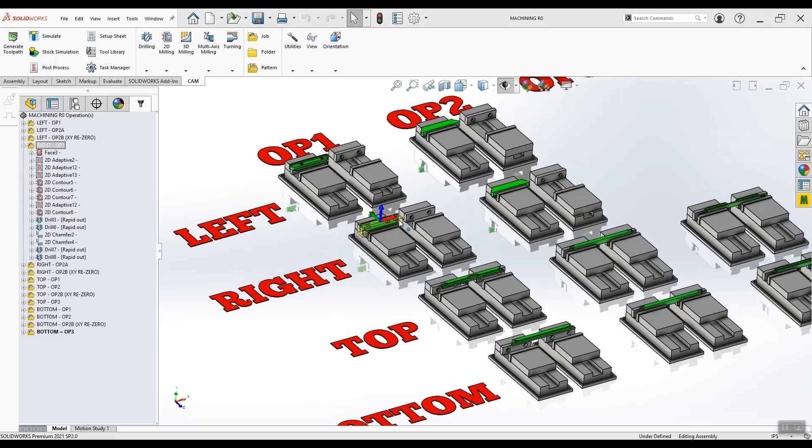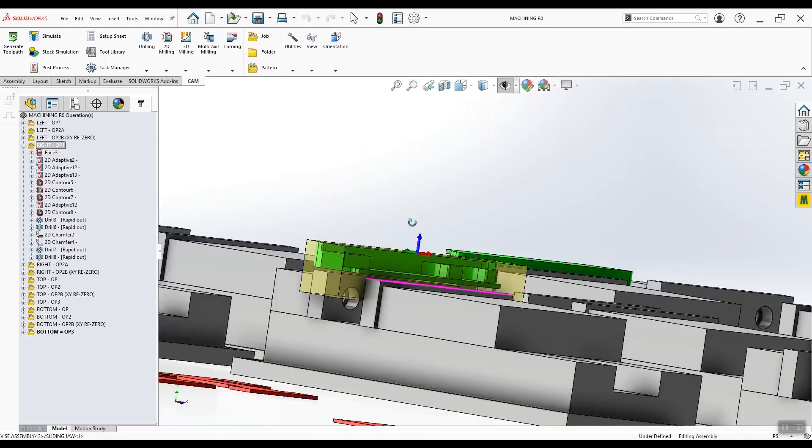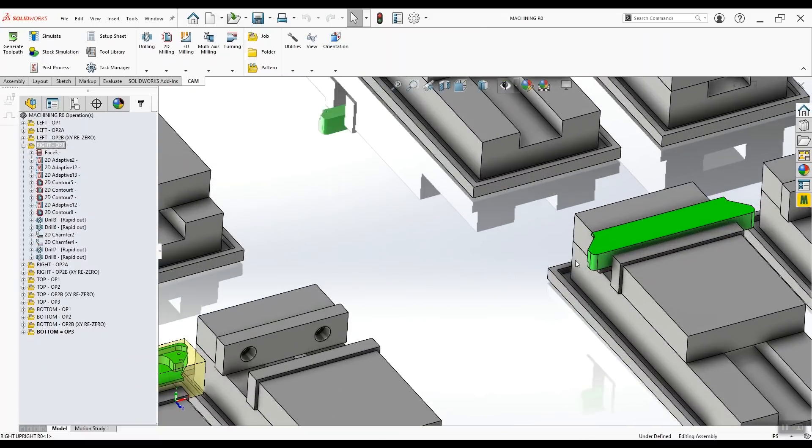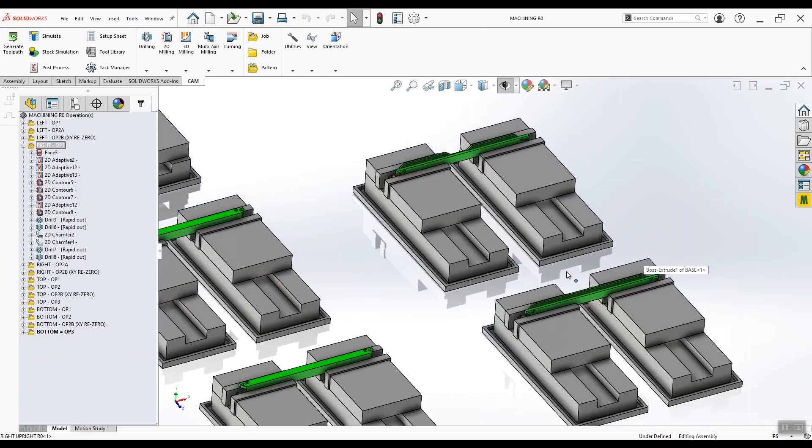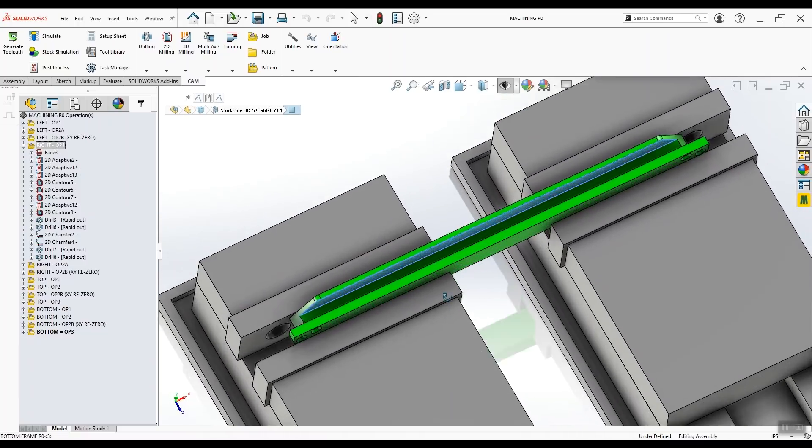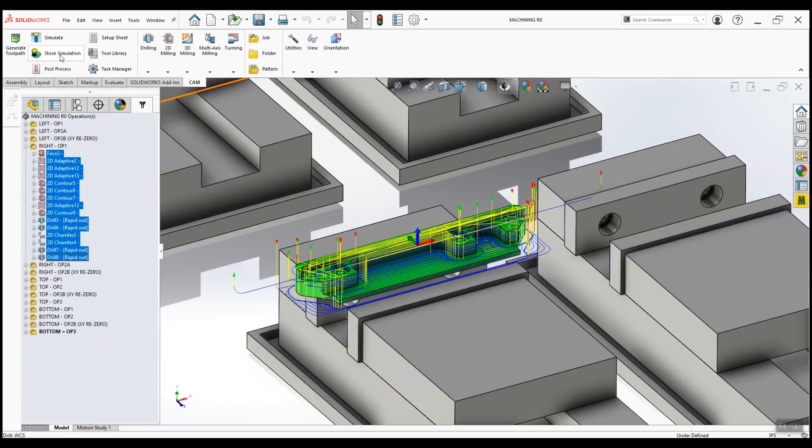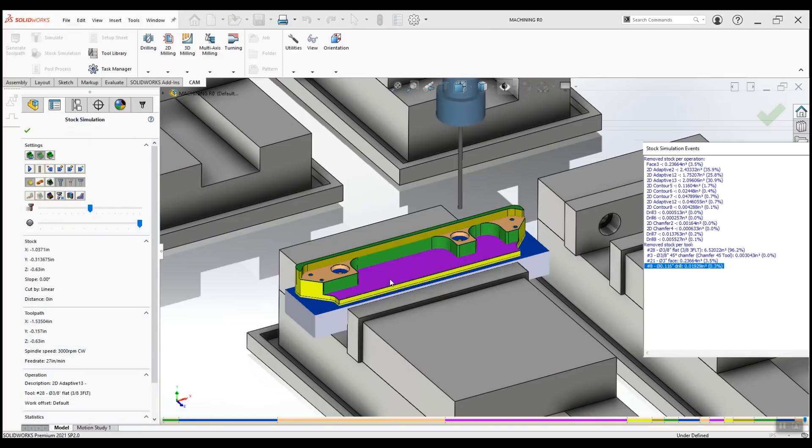The machining is pretty straightforward. All the parts are nice and square so we can hold them in a vise without having to make a fixture plate. For all the parts we're going to just put the stock in the vise, machine everything we can from the top, flip them over, and finish machining from the bottom. There's one additional step for the top and bottom parts which is going to be milling out these kind of long slots. All the tool paths for the right part are in this folder and here's a quick stock simulation to show what we're hoping to end up with after this first operation.